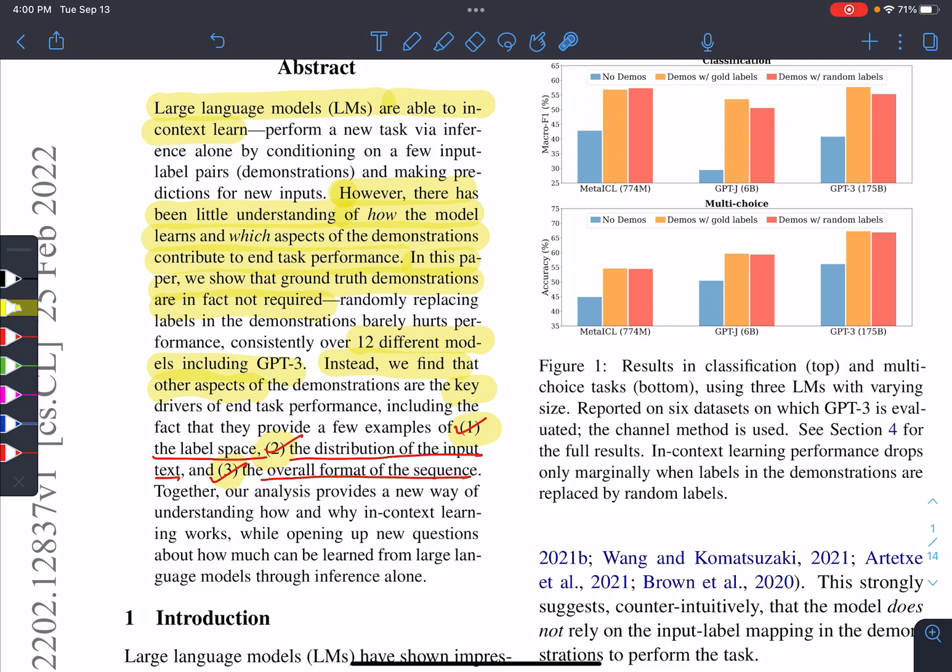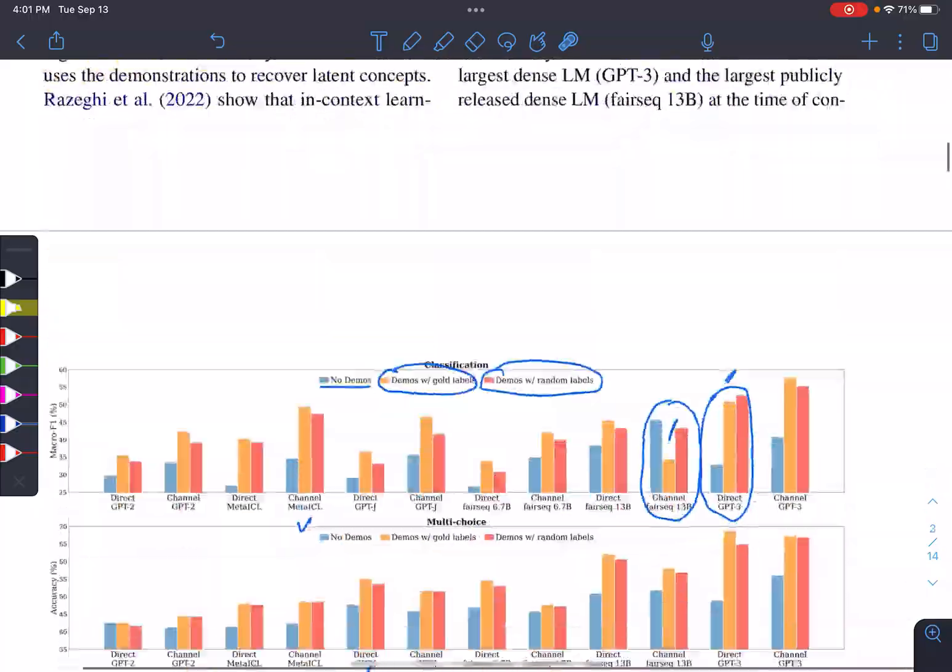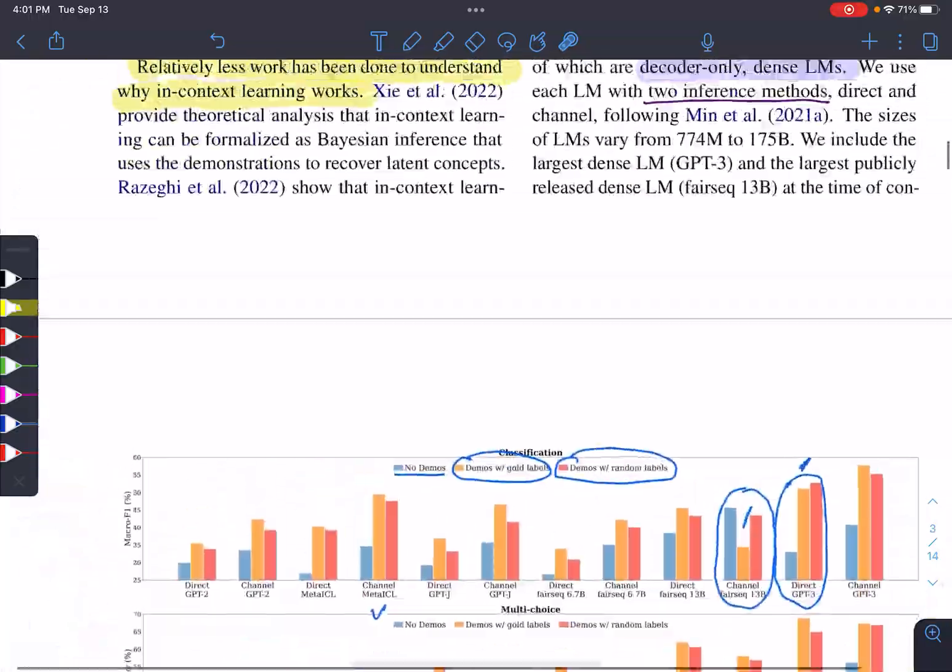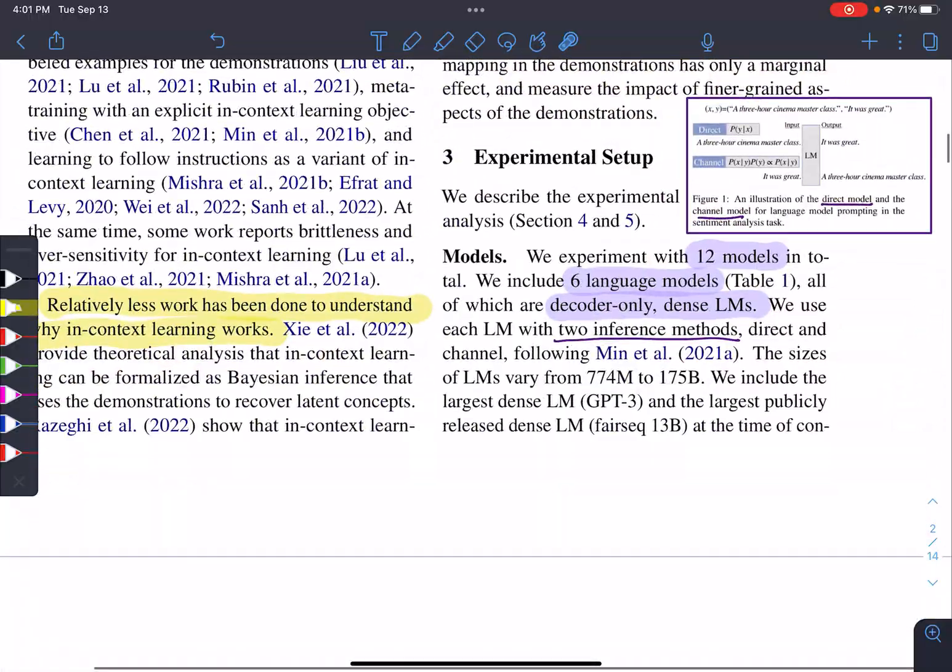In this paper, we show that ground truth demonstrations are in fact not required. What it means is that input-output mapping is not that relevant for in-context learning. However, the other three are important. And they are using 12 models, which I'm going to explain a little bit about experimental setup.